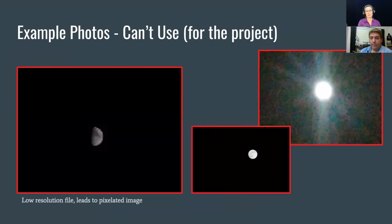Here are examples of bad photos. Pixelation is a big problem. You can also have them too small. This middle one was just out of focus. The top right is overexposed. This is a moon photo that is pixelated and very overexposed, so you can't even tell it's the moon.